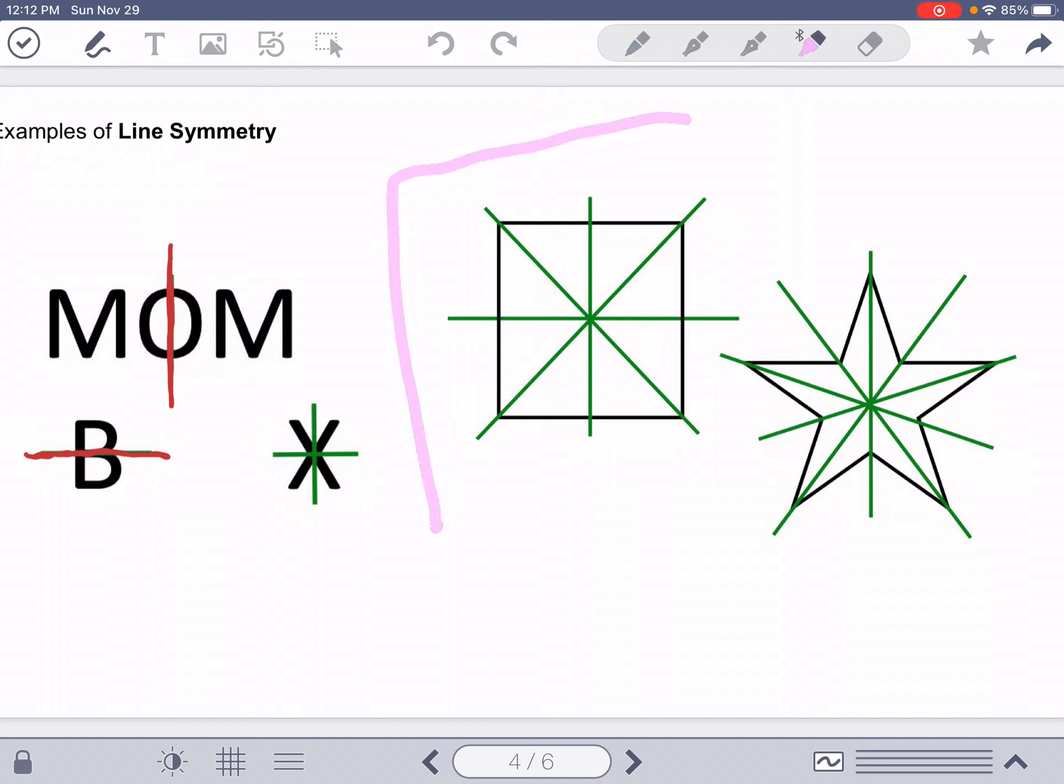Sometimes that happens. Noticing the square and my little star, those have several different lines of symmetry. So I think there's an IXL where you have to draw lines of symmetry, and sometimes those images have more than one line. So you've got to make sure you get all of those lines covered.